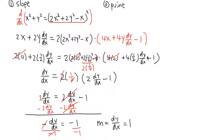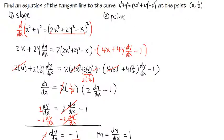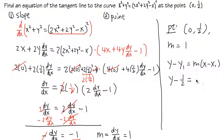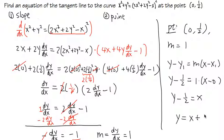The point we have is (0, 1/2) and the slope is equal to 1. Using point-slope form: y minus y₁ equals m times (x minus x₁). Plugging in: y minus 1/2 equals 1 times (x minus 0), which simplifies to y minus 1/2 equals x. Adding 1/2 to both sides to isolate y, we get y equals x plus 1/2. And here we go — this is the equation of the tangent line.